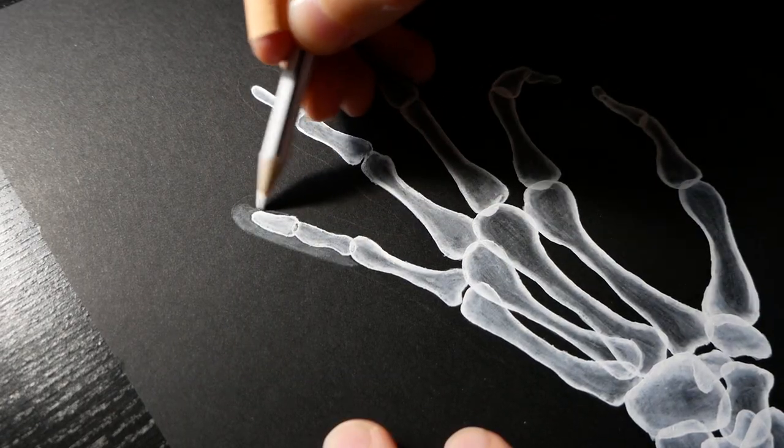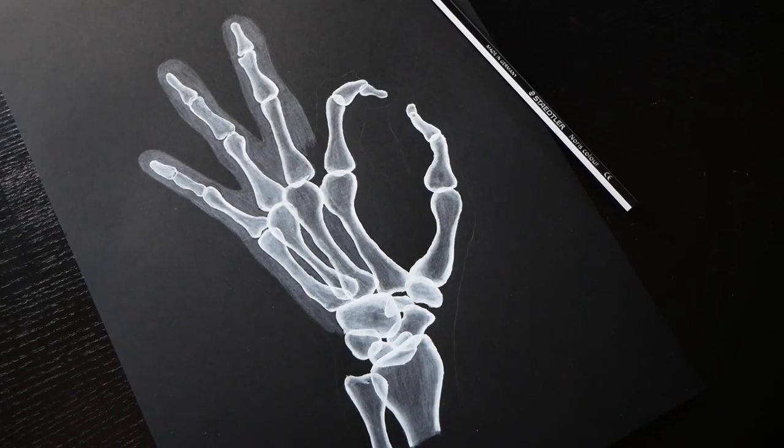I'm seriously extremely happy with this. But of course, we're not done yet. We have to do the flesh around the bones. And for that, we're gonna use our pencil again. And for this, we're again simply coloring in the sections with a solid white color.